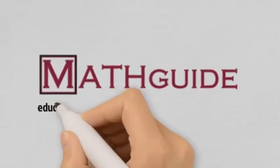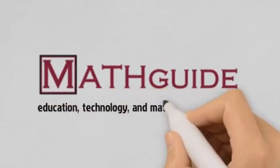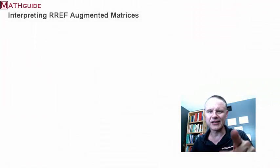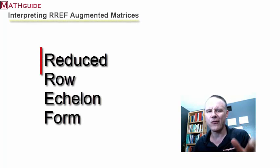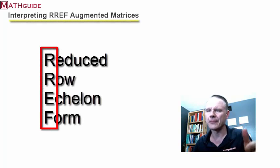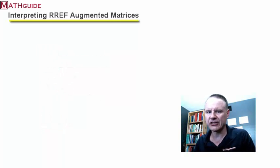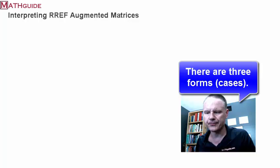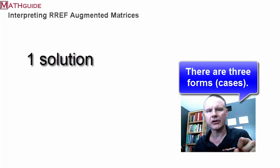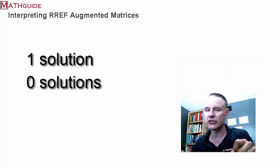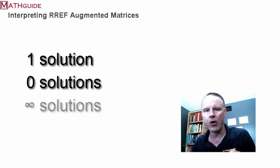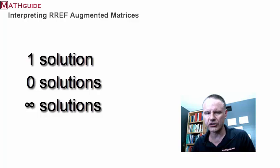This is MathGuide.com and my name is Mark Karadimos. This video is going to teach you how to interpret reduced row echelon form, otherwise known as RREF, augmented matrices. There are three different types of forms: the form where there's one solution, another form where there's zero solutions, and then another form where there's an infinite number of solutions.